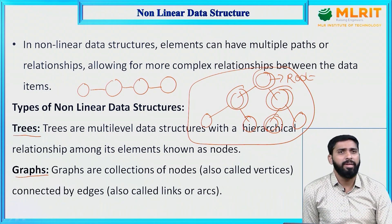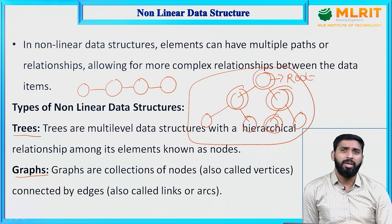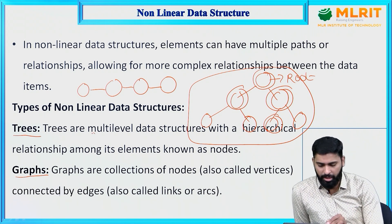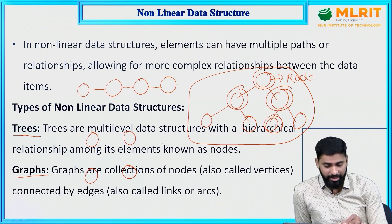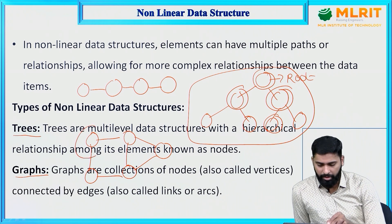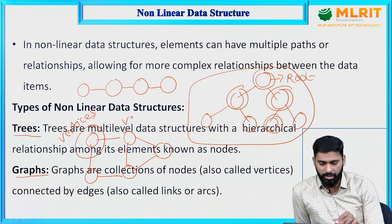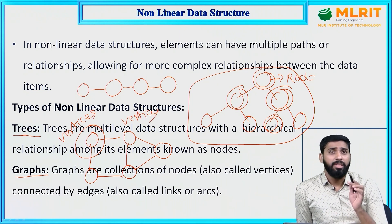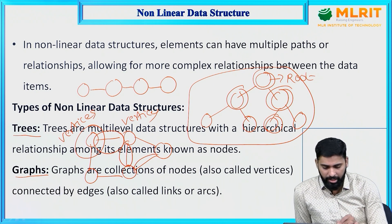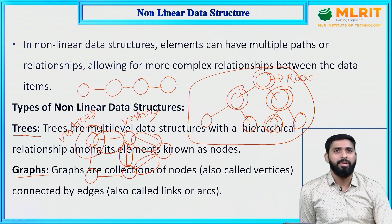Another non-linear data structure is a graph. Graphs are a collection of nodes — also called vertices — connected by edges. For example, consider different cities as nodes. These cities are connected, and they are called vertices. These vertices are connected by edges — the lines connecting the nodes are the edges. This is a graph.